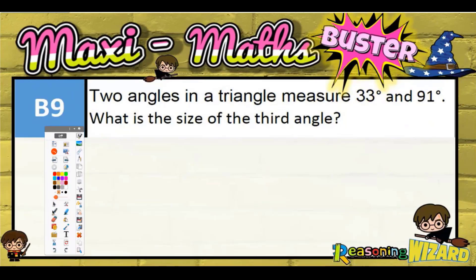Question nine: Two angles in a triangle measure 33 and 91. What is the size of the third angle? So if we draw a quick sketch of a triangle, this one here can be our 91, this one down here can be our 33. We need to figure out the missing angle.